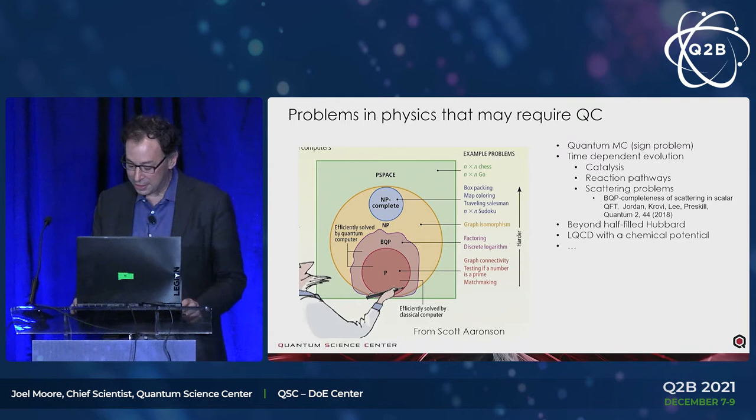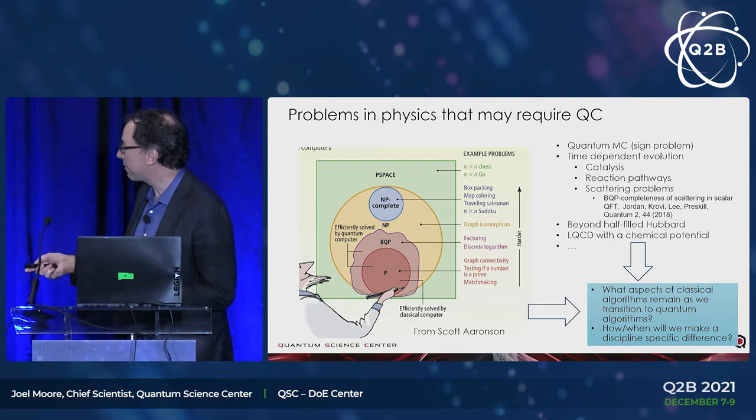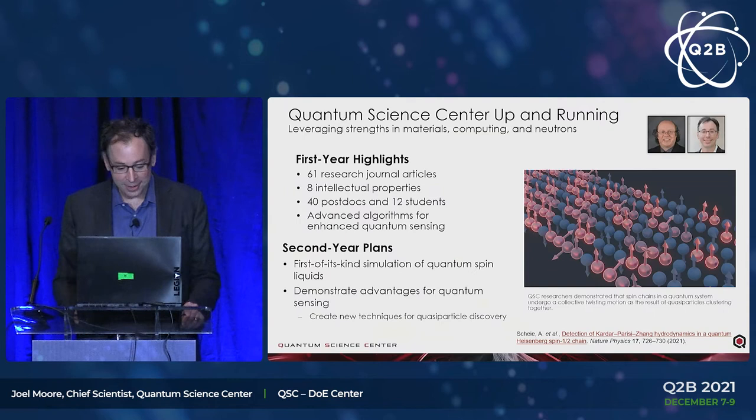For the near term, there's still going to be a lot of classical pre-processing before you turn on the quantum computer — you want to save your quantum resources for the very hardest part of the problem. We do understand, at least in the specific disciplines where we're working, how to do that and where the quantum hardware as it comes online is going to make a difference. Here's one of our science highlights from the first year — an approach that is very uniquely QSC.